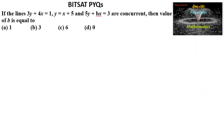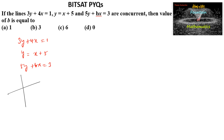If the lines 3y + 4x = 1, y = x + 5, and 5y + bx = 3 are concurrent — meaning all three lines pass through the same point — then the point of intersection of the first two lines must also lie on the third line. So let us solve the first two equations.